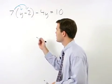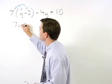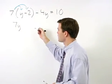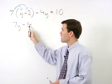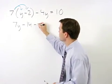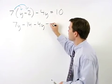7 times y is 7y and 7 times negative 2 is negative 14. So we have 7y minus 14 minus 4y equals 10.